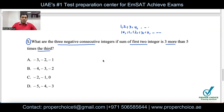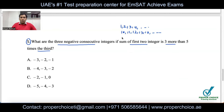How do we write consecutive numbers generally? If the first number is x, the next is x + 1, then x + 2, x + 3, and so on. This is the general way to represent consecutive integers, whether positive or negative.